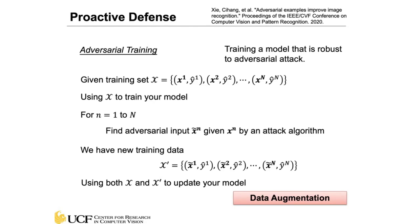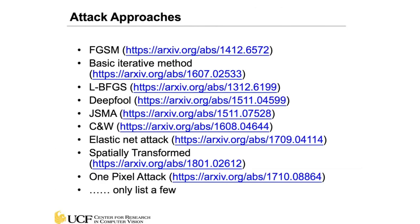You can think of adversarial training as a type of data augmentation technique — instead of doing resizing, cropping, color change, or flipping, we are generating the adversarial counterpart of the original image to specifically improve the adversarial robustness of the machine learning model.